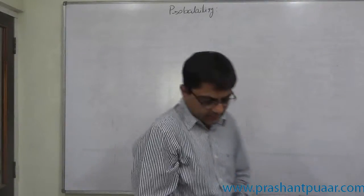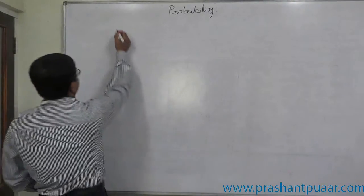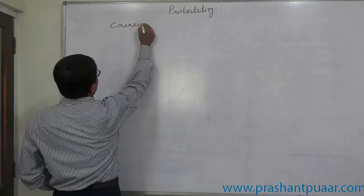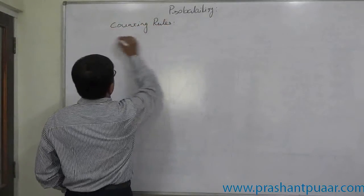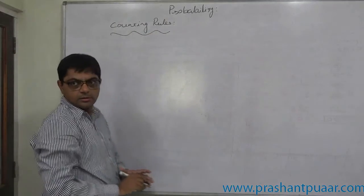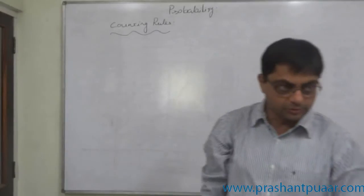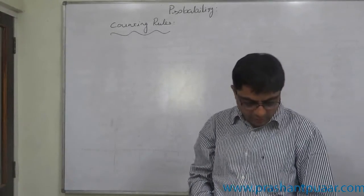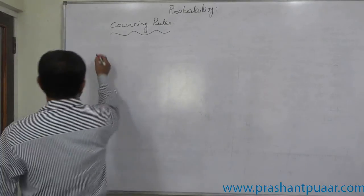Probability. The first topic is counting rules — how to count the possible number of outcomes. The first counting rule is for multi-step experiments.